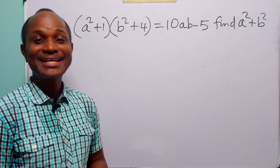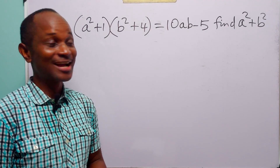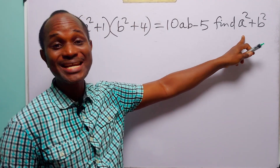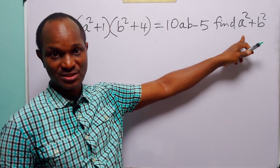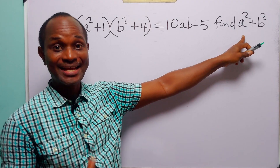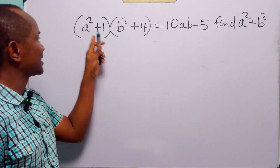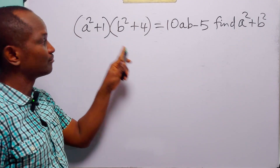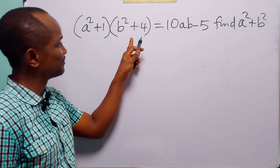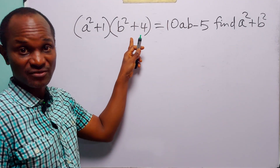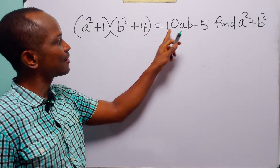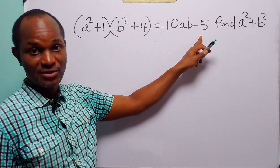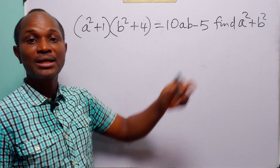Hello and welcome. In this math tutorial, our task is to find the value of a squared plus b squared, given that a squared plus 1, multiplied by b squared plus 4, is equal to 10ab minus 5.